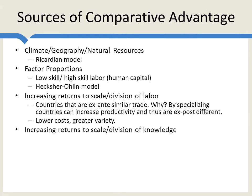When we think about increasing returns to scale, we typically think about a big dam, or a huge auto plant which is able to take advantage of robots the bigger it gets, or giant agricultural farms. But it's important to realize that increasing returns to scale can also refer to the division of knowledge — as people specialize, they become more knowledgeable about an area, and that is what increases their productivity. Think about physicians: we don't simply have generic physicians. We have heart surgeons, brain surgeons, podiatrists — specialists in the feet — specialists in the ear, nose, and throat, cancer specialists, diabetes specialists. By dividing knowledge among many different brains, we get a vast increase in productivity.